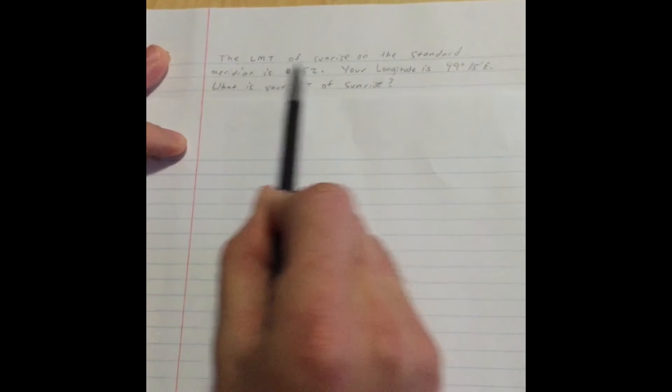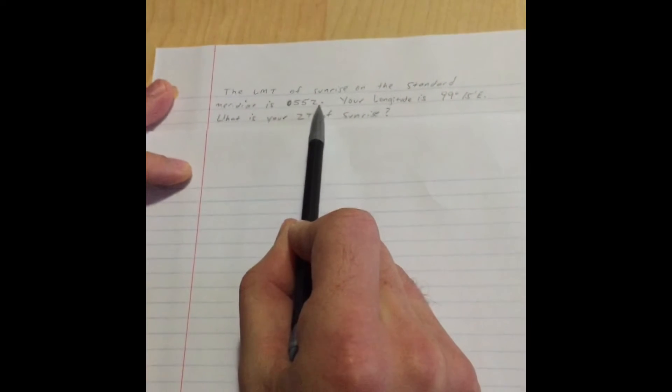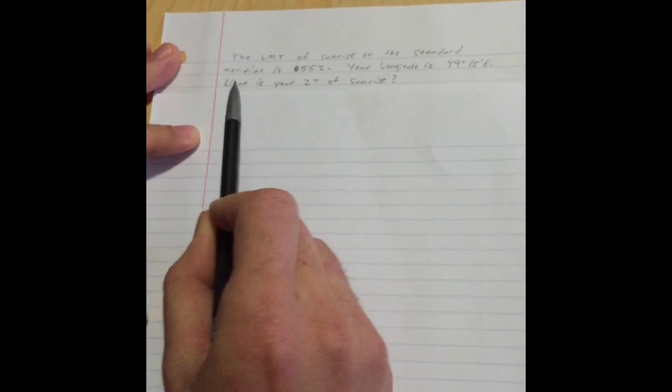Now, the Coast Guard problem says that the local mean time of sunrise on the standard meridian is 0552. Your longitude is 99 degrees, 15 minutes east. What is your zone time of sunrise?